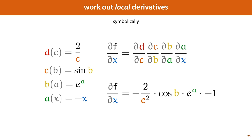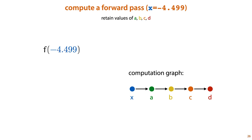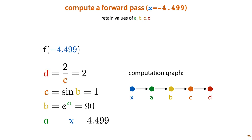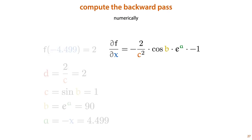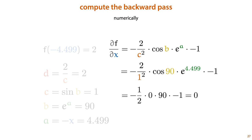We start to work out what this expression means for an actual specific input. For instance, imagine the input x equals minus 4.499. The first thing we need to do is compute a forward pass — simply computing the output of the model for a particular input by following the computation graph. During our computation, we retain the intermediate values a, b, c, and d, because these will be useful later on. Next up is the backward pass: we take the chain rule-derived form of the derivative and fill in those intermediate values. This gives us a function with no variables, so we can compute the output — the derivative for input minus 4.499 is zero.